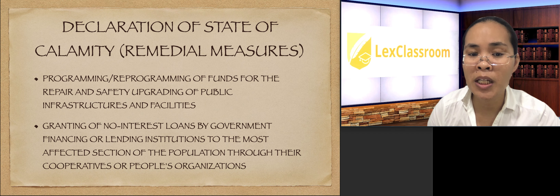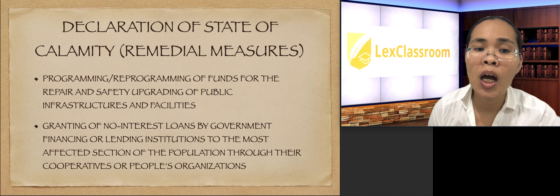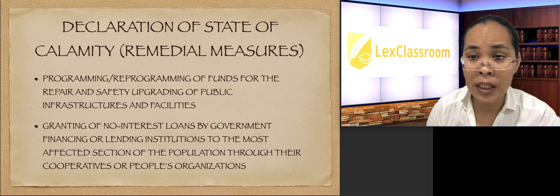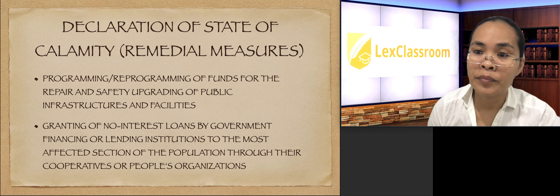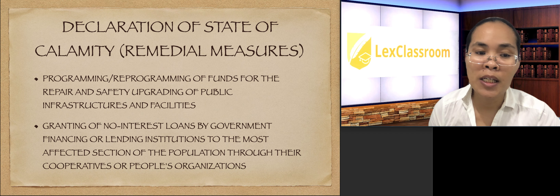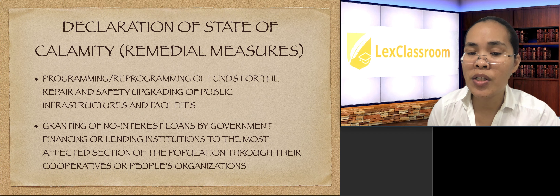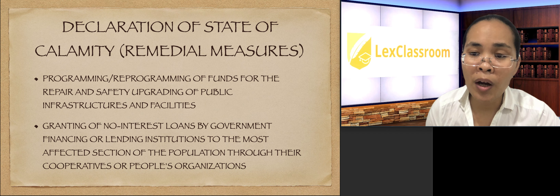The third and fourth remedial measures are as follows: programming and reprogramming of funds for the repair and safety upgrading of public infrastructures and facilities — this is very important especially after earthquakes, typhoons, or volcanic eruptions. Lastly, and very important for those wanting to rebuild their businesses or residences affected or washed away by the calamity, there is the granting of no-interest loans by government financing or lending institutions to the most affected sections of the population through their cooperatives or people's organizations.